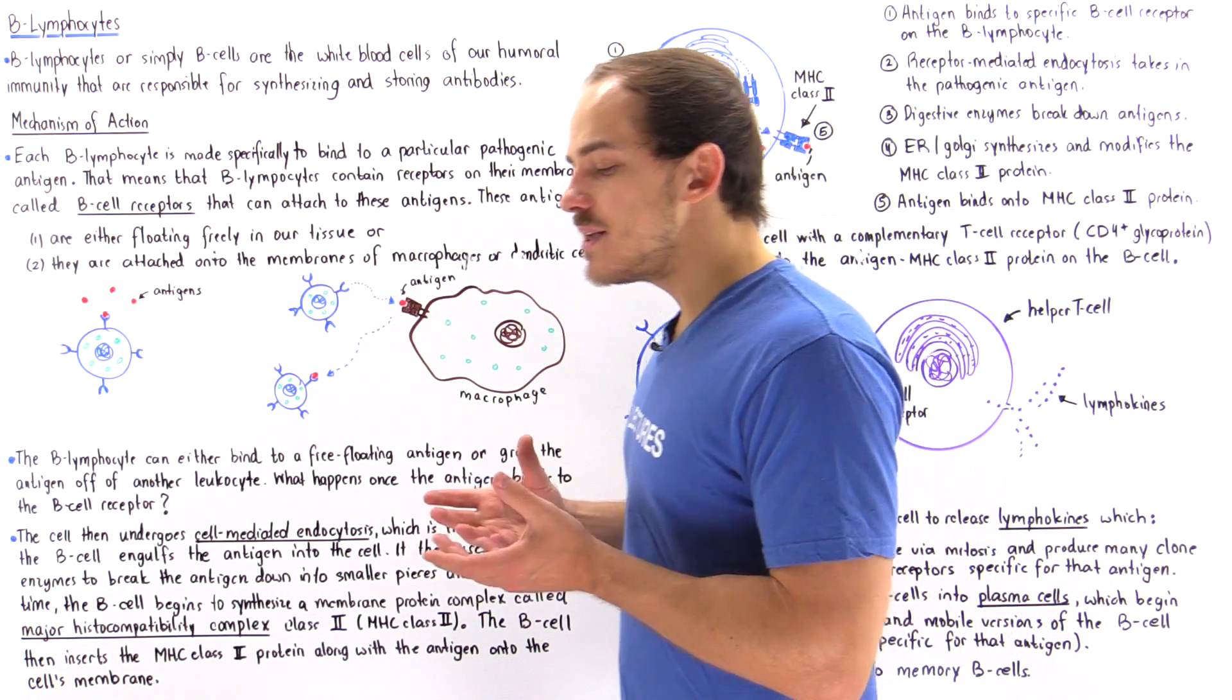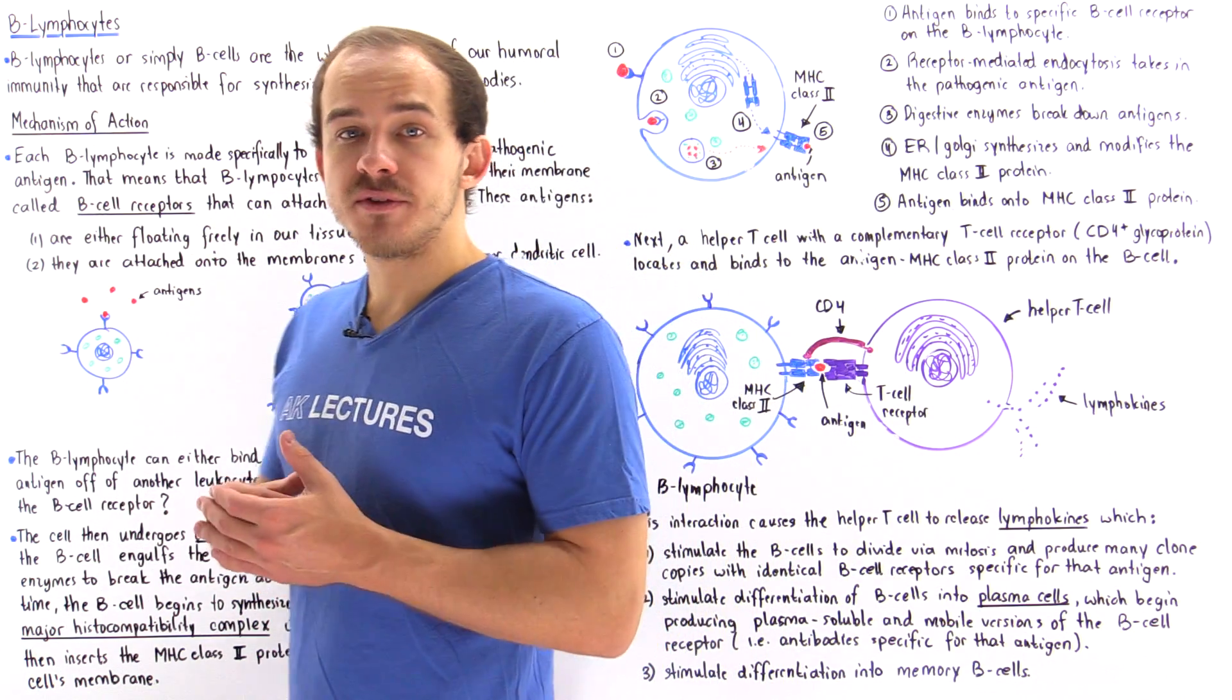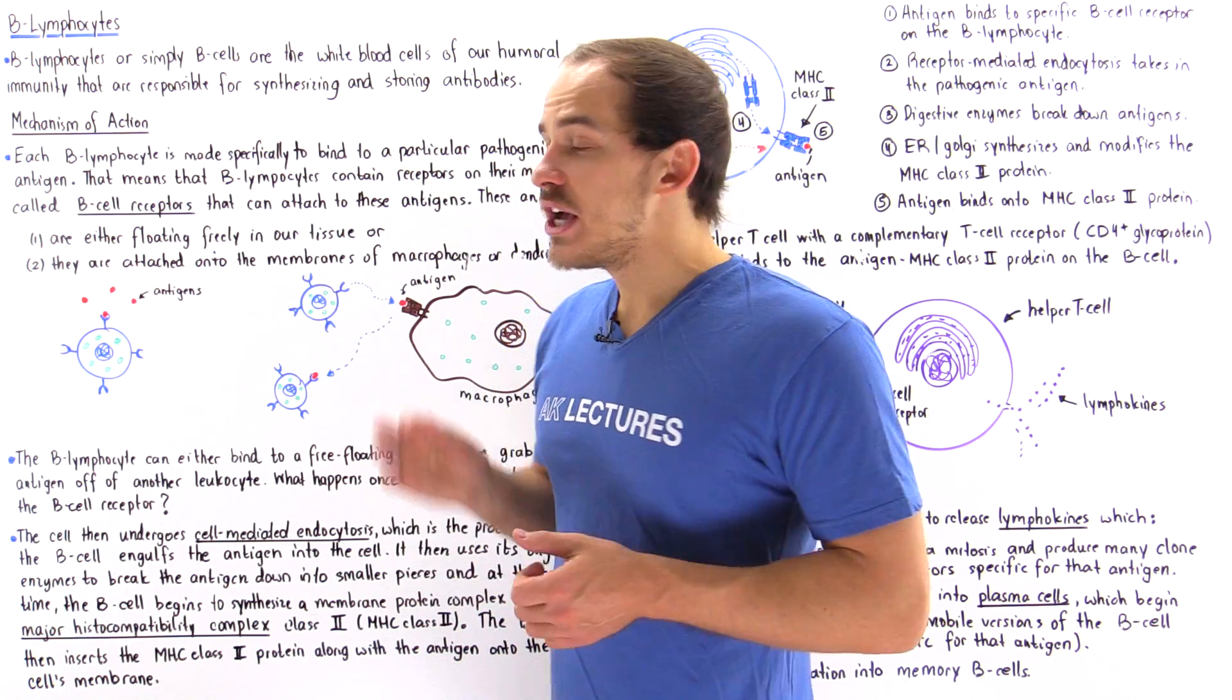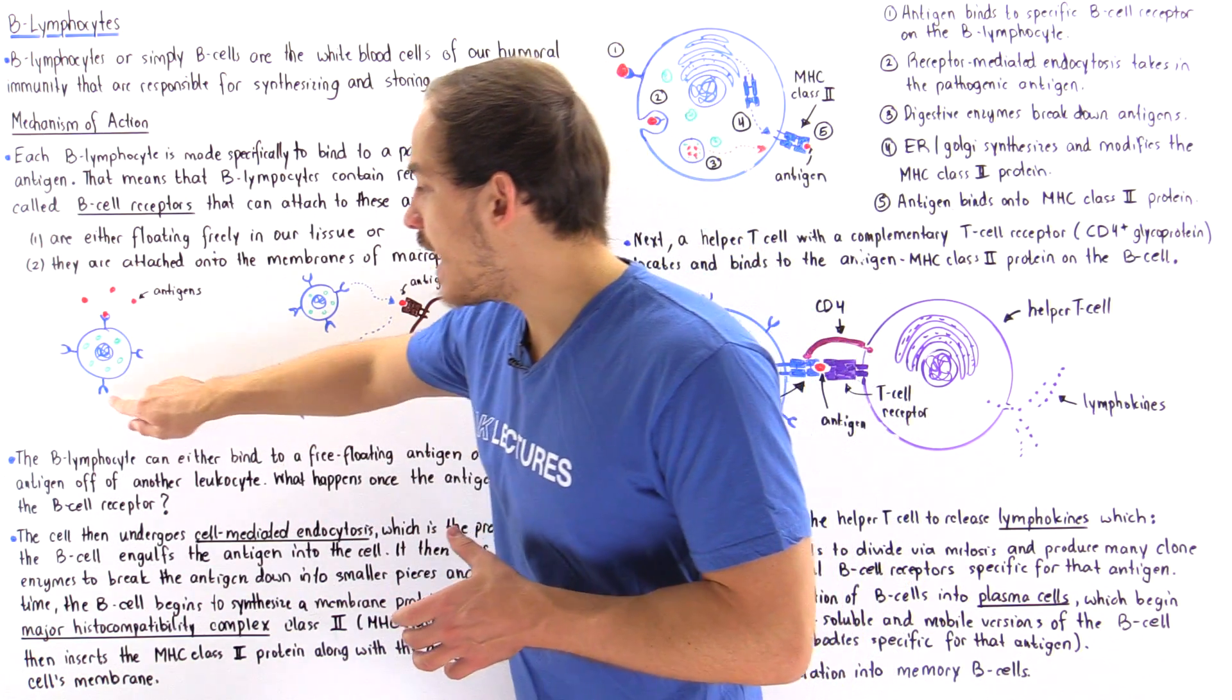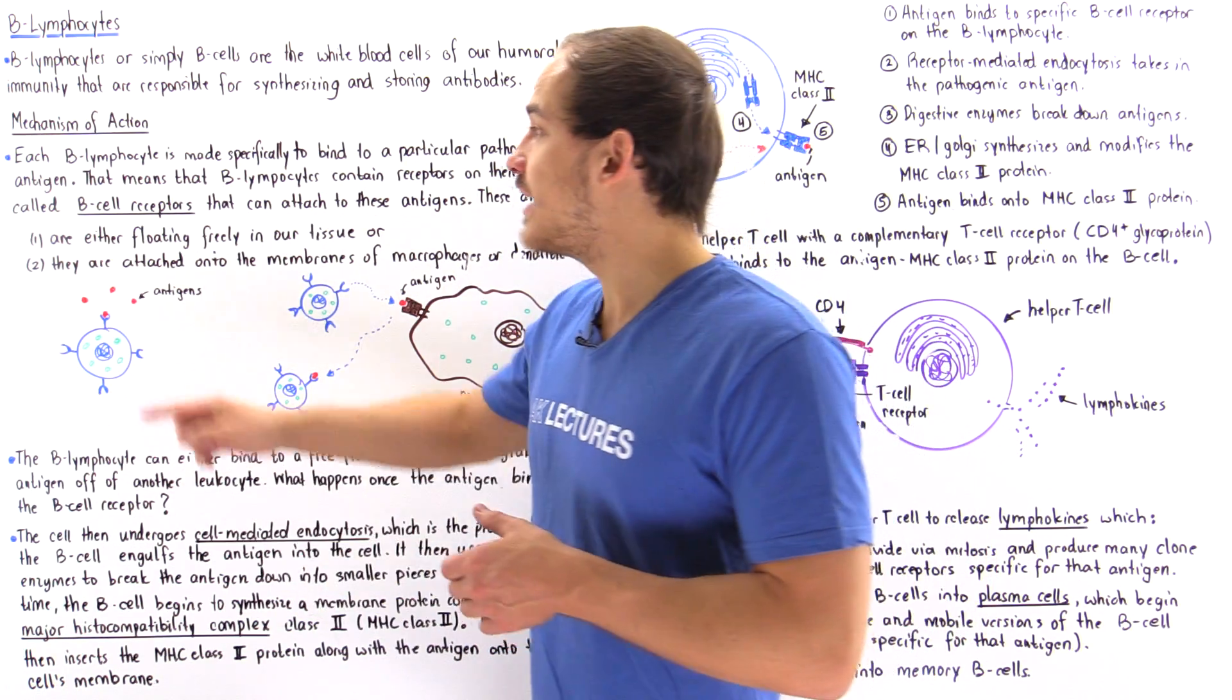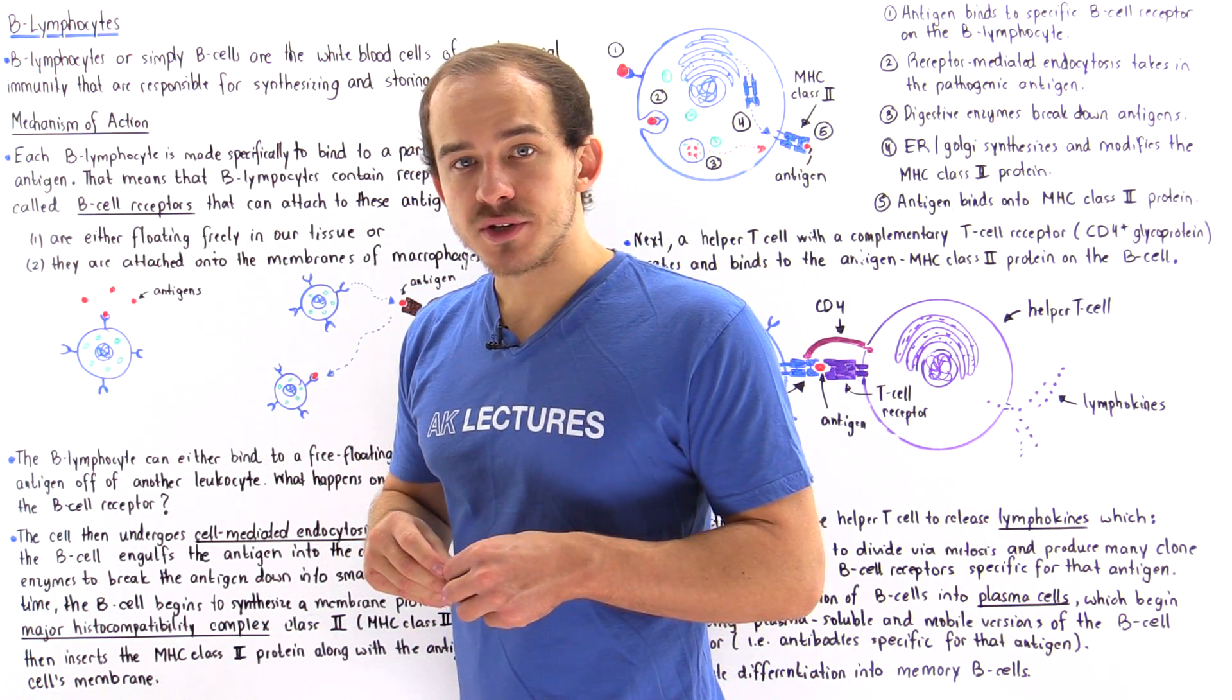Let's begin by discussing the structure of a B lymphocyte. Here we have a B lymphocyte, and notice that it contains receptors on its membrane known as B cell receptors.